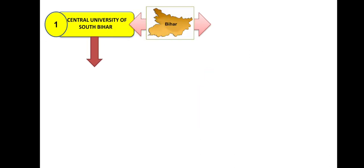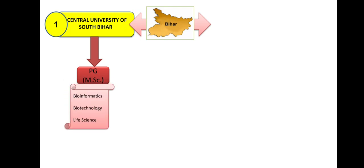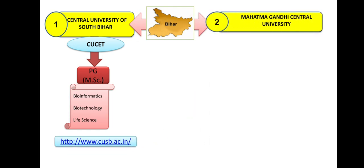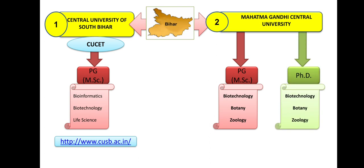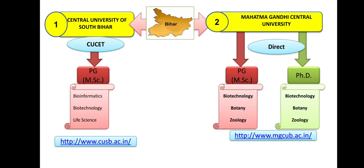Next, Bihar. Bihar has several universities, with two having Biological Sciences. Central University of South Bihar: MSc in Bioinformatics, Biotechnology, and Life Science. Admission through CUCET. Second is Mahatma Gandhi Central University in Bihar: PG in Biotechnology, Botany, and Zoology; PhD in Biotechnology, Botany, and Zoology. Admission will be direct, that is on merit basis. Websites are provided for both.